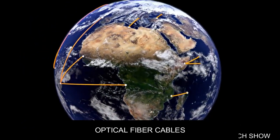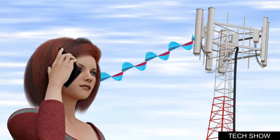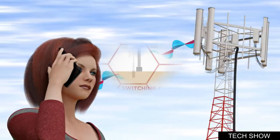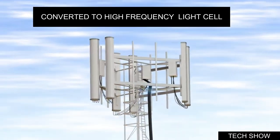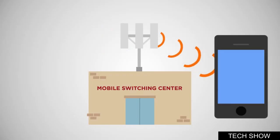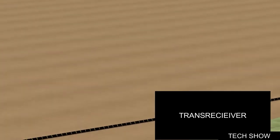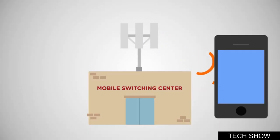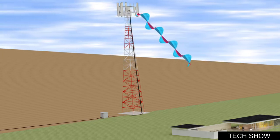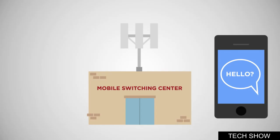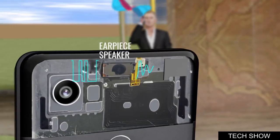The signal from your phone travels to the nearest cell tower, which converts it into high-frequency pulses. These travel through optical fiber cables to the destination tower — the tower closest to the person you are calling. From there, electromagnetic waves are transmitted to your friend's phone, where the same process happens in reverse, converting the signal back into voice.